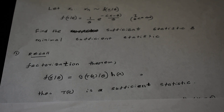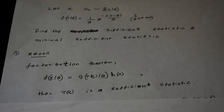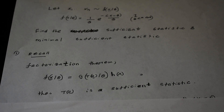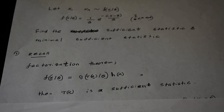The first function is g(T(x) | theta), which depends on theta through the sufficient statistic T(x). The second function is h(x), which depends only on the observations x but not on theta. If we can rewrite our joint density function in this form, then based on the Factorization Theorem, T(x) is our sufficient statistic.